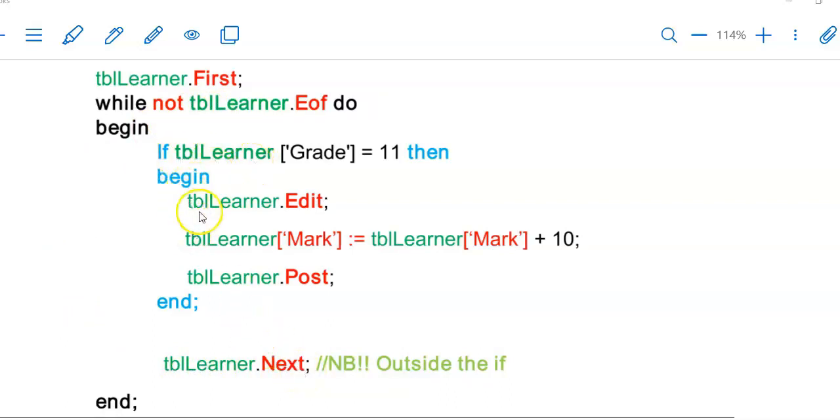And then on the inside of my if statement I then have my edit, my change to my record to whichever fields I want to make a change to. And still on the inside of the if I have my dot post.